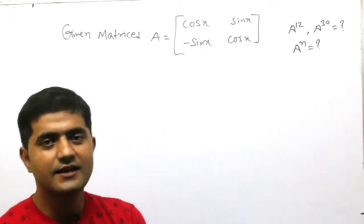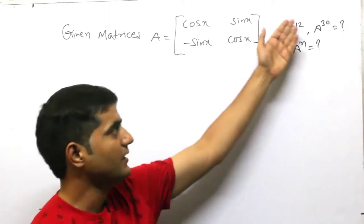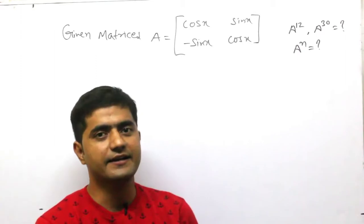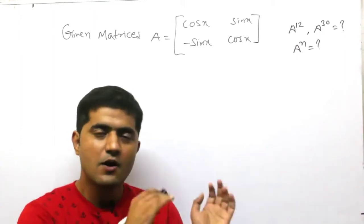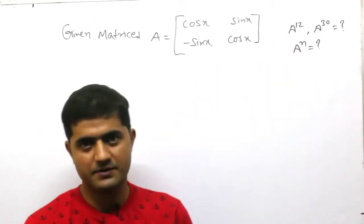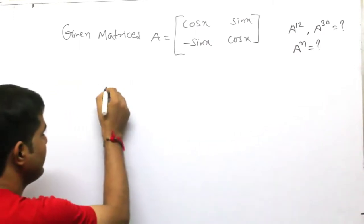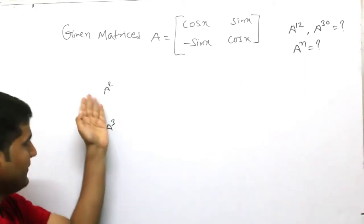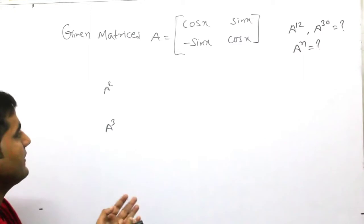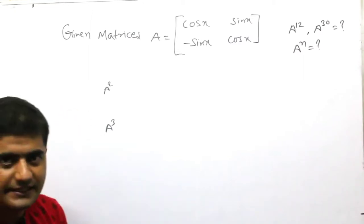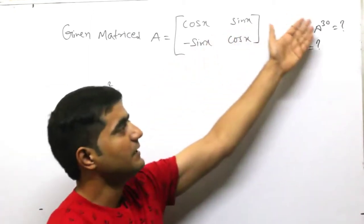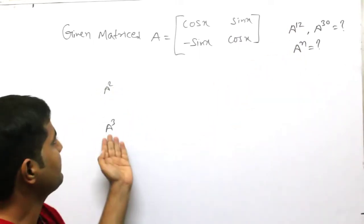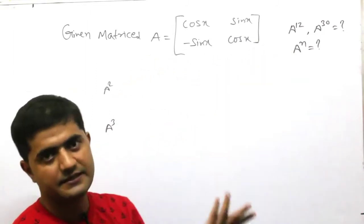For generalised results, since A power 12 and A power 30, or higher values, we will solve a small values pattern. The pattern will be applied in small power, and the same pattern will be applied in higher power. So we will try to make A square first, and make A power 3. After the matrix form, the value of A square and A power 3 — the same pattern will apply to A power 12, A power 30, or A power n. It will be generalised.